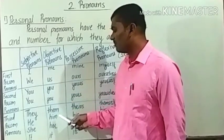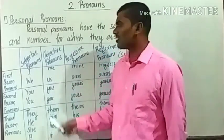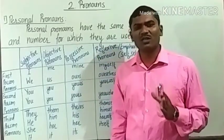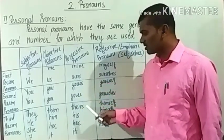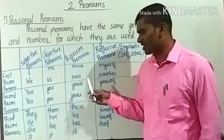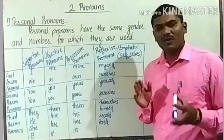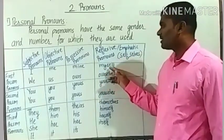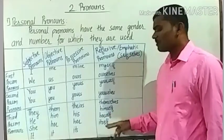Objective pronouns are: me, us, you, you, them, him, her, it. These pronouns are used as an object in the sentence, so they are called objective pronouns. Possessive pronouns show the ownership of an object or something. These pronouns are: mine, ours, yours, yours, theirs, his, her, its. For example, 'That book is mine' — 'mine' shows possession. Reflexive or emphatic pronouns are made by suffixing 'self' or 'selves' at the end: myself, ourselves, yourself, yourselves, themselves, himself, herself, itself.